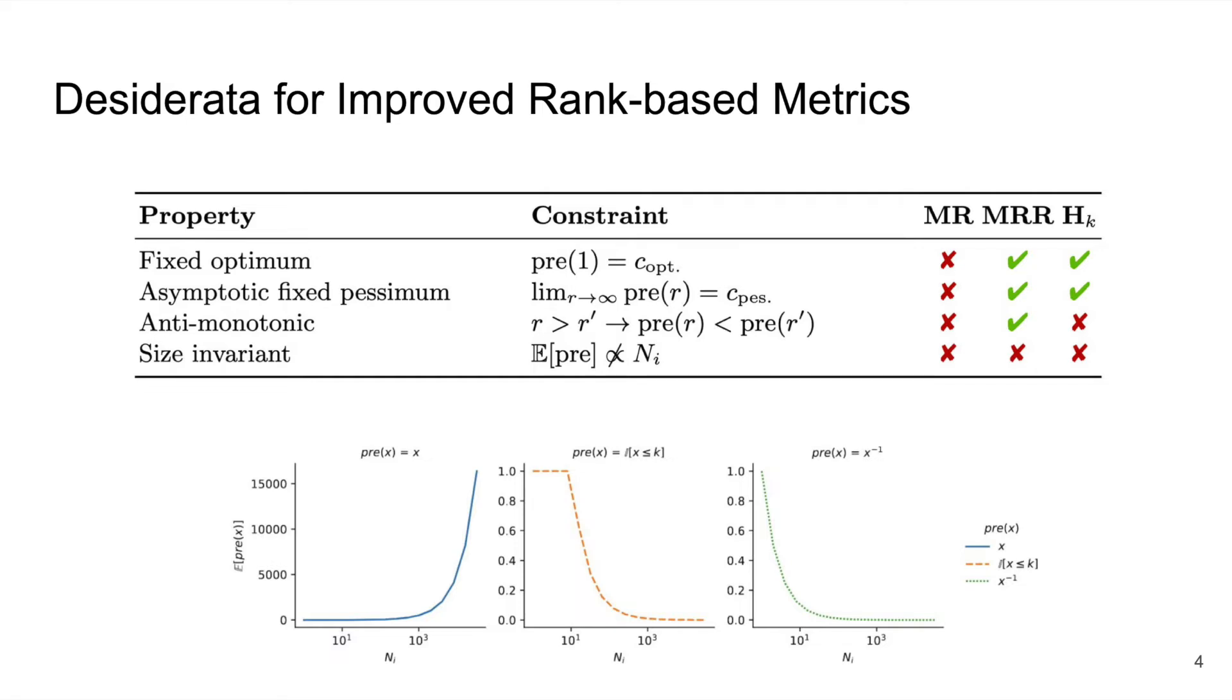Second, we want the worst value of the metric to happen as ranks get bigger and approach the maximum possible rank. And so here we're using infinity as an informal shorthand for that. Again, the mean reciprocal rank and hits at k satisfy this. And third, we want the ranking function to be anti-monotonic, meaning that bigger ranks mean unique, worse values, which is only true for the mean reciprocal rank.